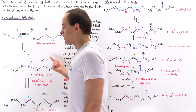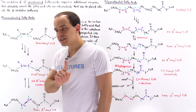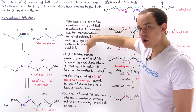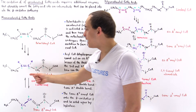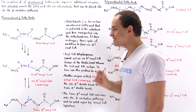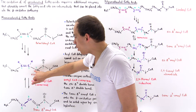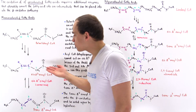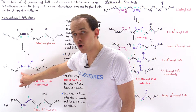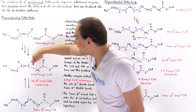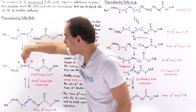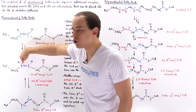The problem with this molecule is that the first enzyme that catalyzes step one of beta-oxidation — acyl-coenzyme A dehydrogenase — cannot actually act on it. Recall that acyl-coenzyme A dehydrogenase generates a double bond between carbon 2 and carbon 3. The problem is we already have a double bond between carbon 3 and carbon 4, so this enzyme cannot generate a double bond between carbon 2 and carbon 3 because of the presence of that existing double bond.